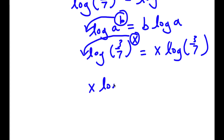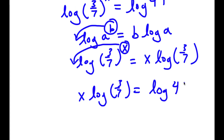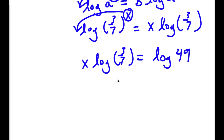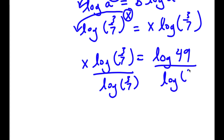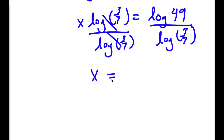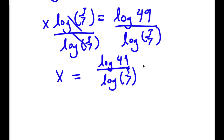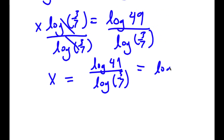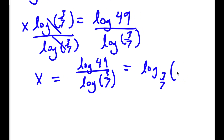So now I have x times log 3 over 7 is equal to log 49. I can divide both sides by log 3 over 7, so x is equal to log 49 over log of 3 over 7, which is the same thing as log base 3 over 7 of 49.